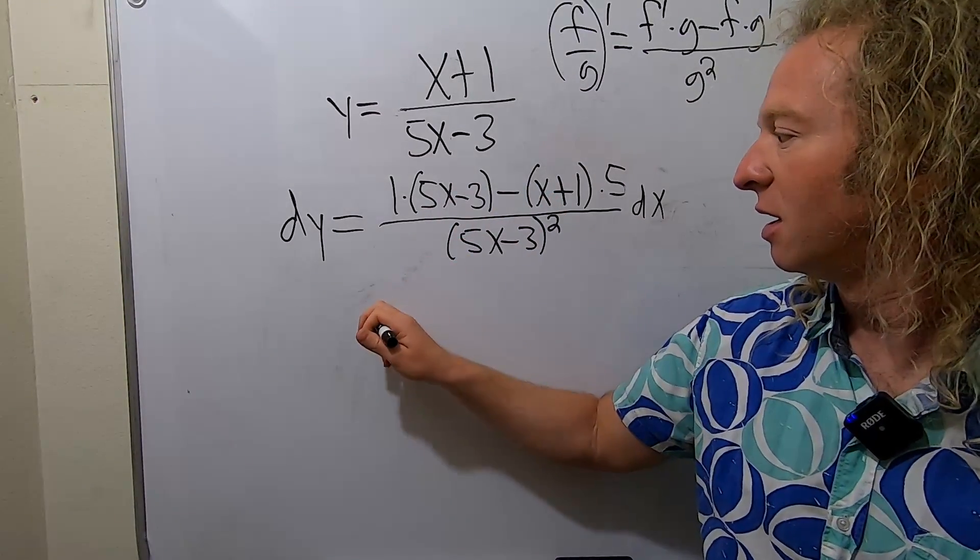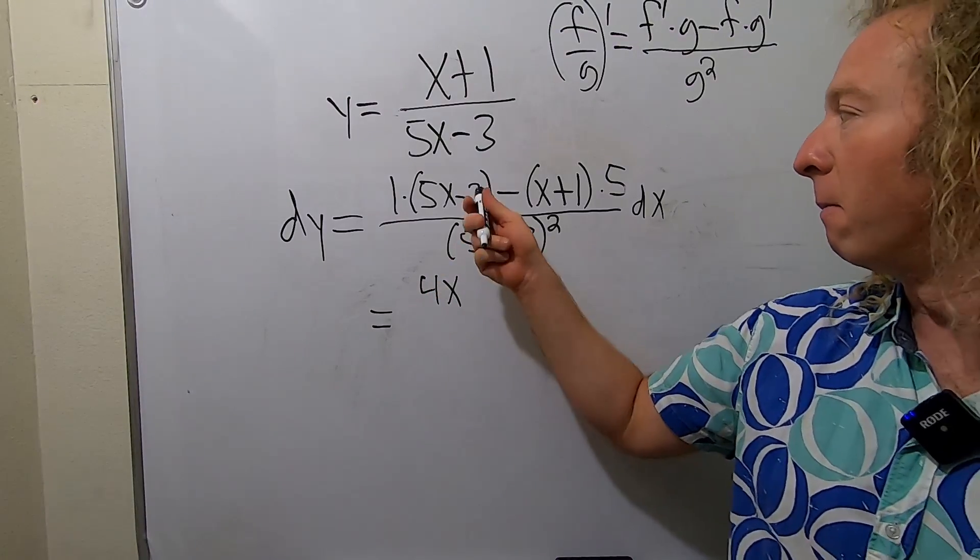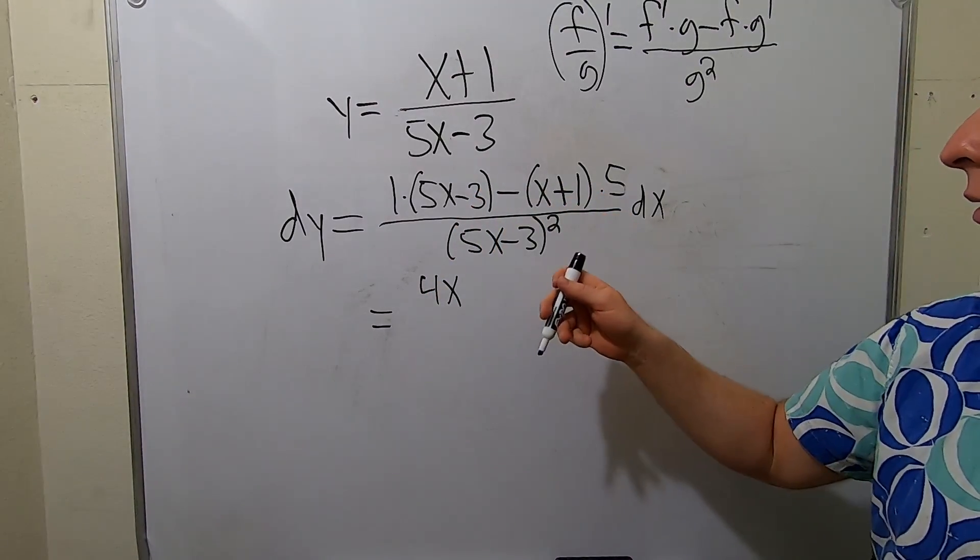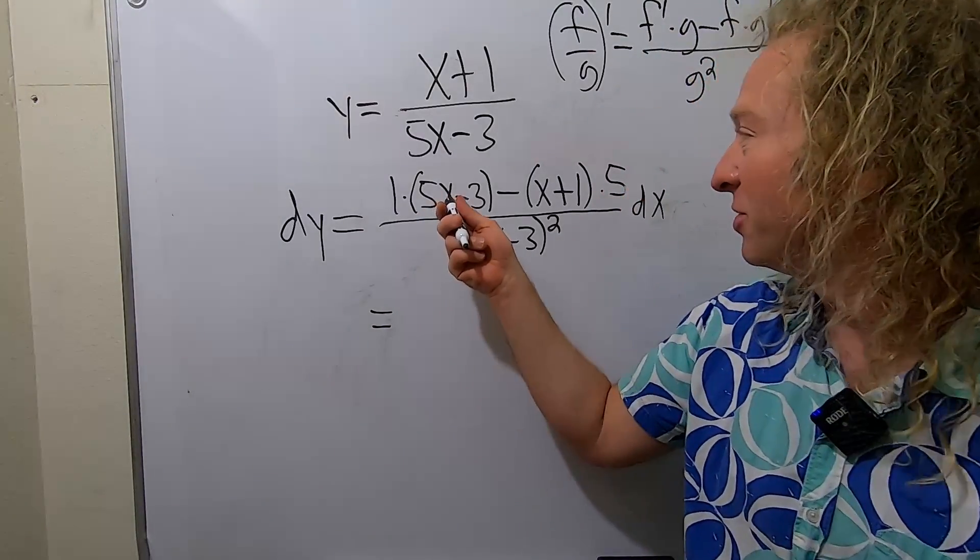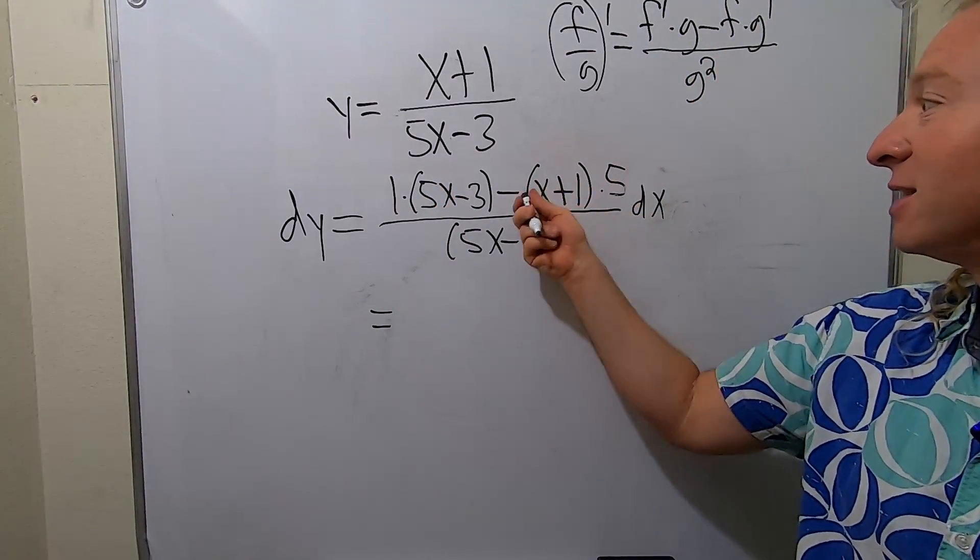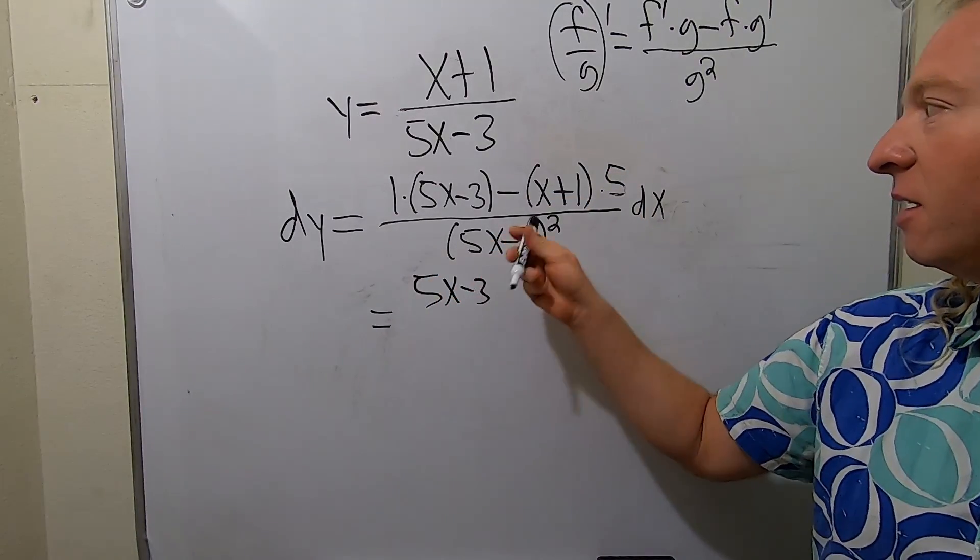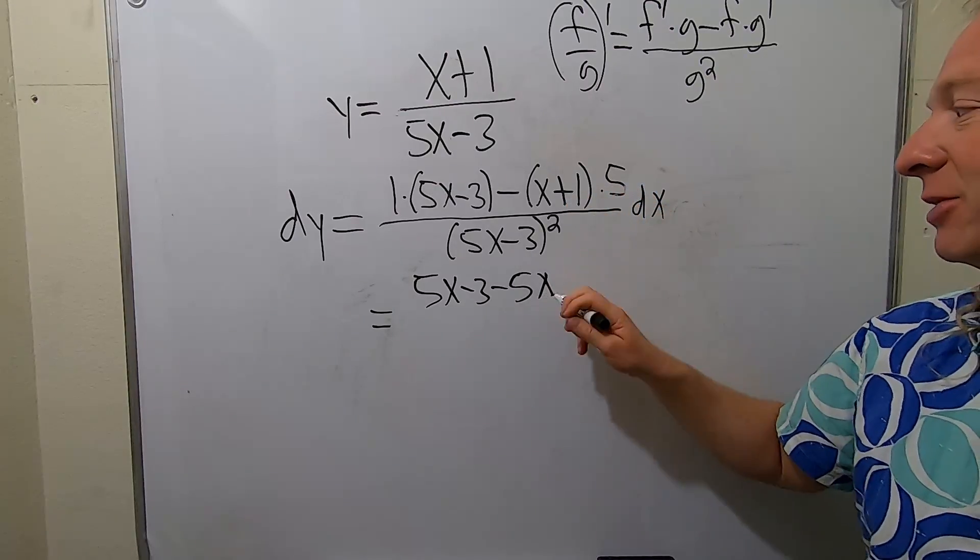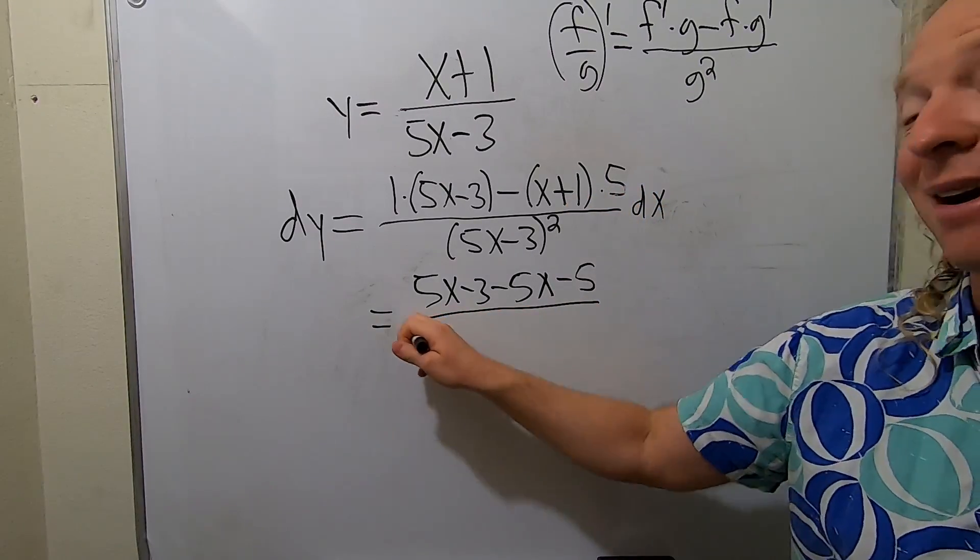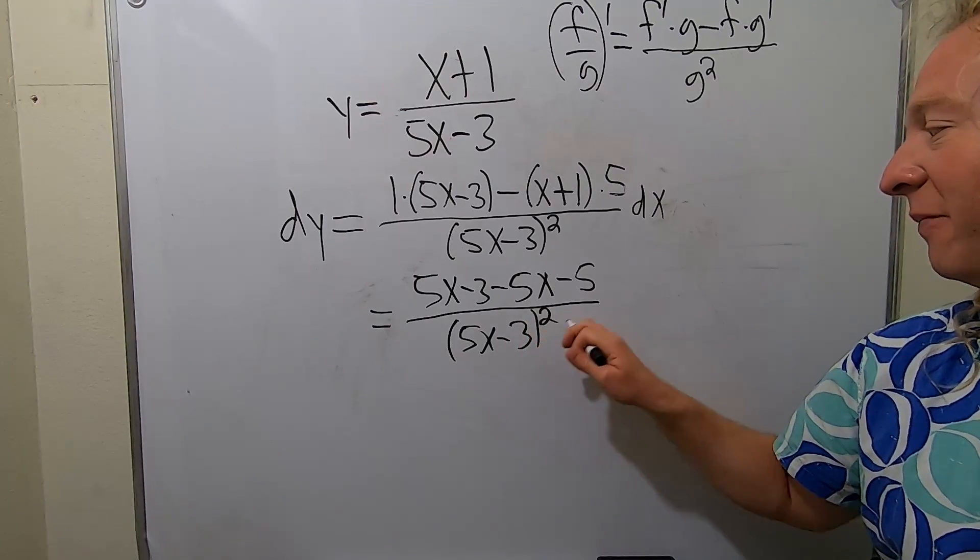5x minus x, that's going to be 4x. So we have 4x minus 3 minus 1. Oh, I almost messed up. Check it out, I forgot about the 5. So this is really 5x minus 5x, so they cancel. In fact let me go ahead and show that step. So minus 5x. Easy to mess up, I almost did. Glad I caught it. That's the important thing. 5x minus 3 squared dx.